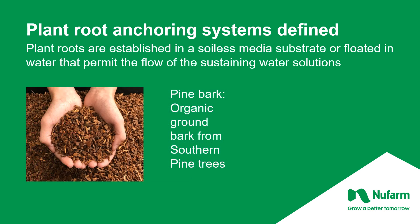Pine bark started out as a waste product from paper mills in the south, free for the taking. Like perlite, it was used as a component in soil-based growing, but it too has moved into a 100% pure rooting base for hydroponic production. The benefits are root attachment, water flow, and a long life in the container. No longer free as a waste product from wood milling, it remains a very common mainstay for growing today.